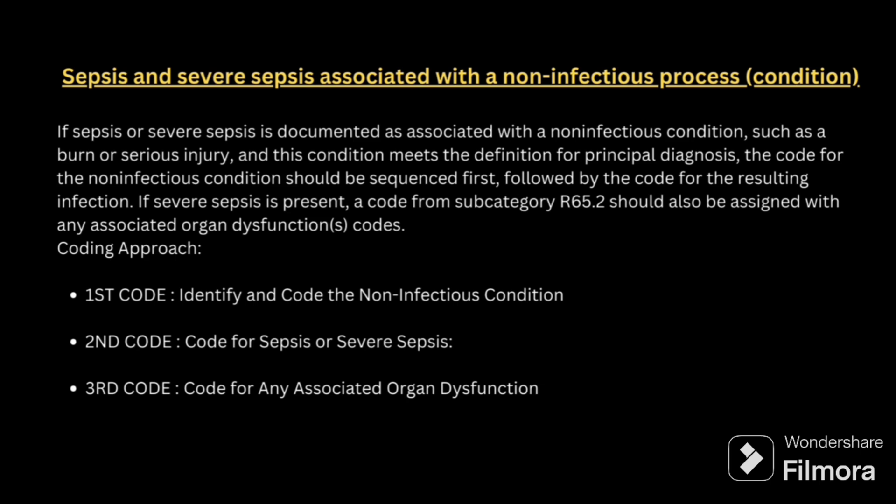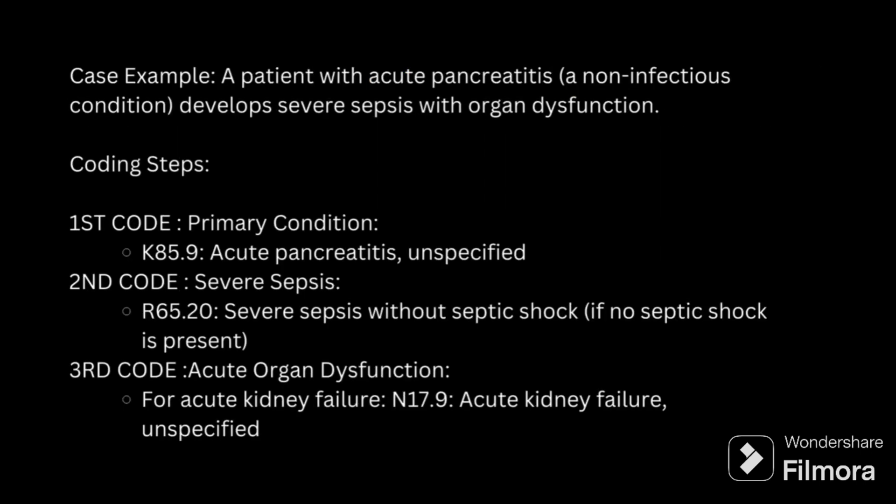Next: sepsis and severe sepsis associated with a non-infectious process. Non-infectious processes include fractures, burns, neoplasm, and pancreatitis. The primary code will be for the non-infectious condition, the secondary code for sepsis, and the third code for organ dysfunction. Example: a patient admitted with acute pancreatitis developing sepsis with organ dysfunction — acute pancreatitis is assigned as primary, second code for sepsis, third for severe sepsis, and finally code for organ dysfunction.